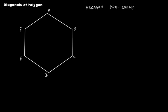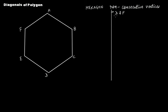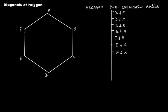The pairs of non-consecutive vertices: starting from d — d and f, d and a, d and b. Now let's take e — e and a, e and b, e and c.